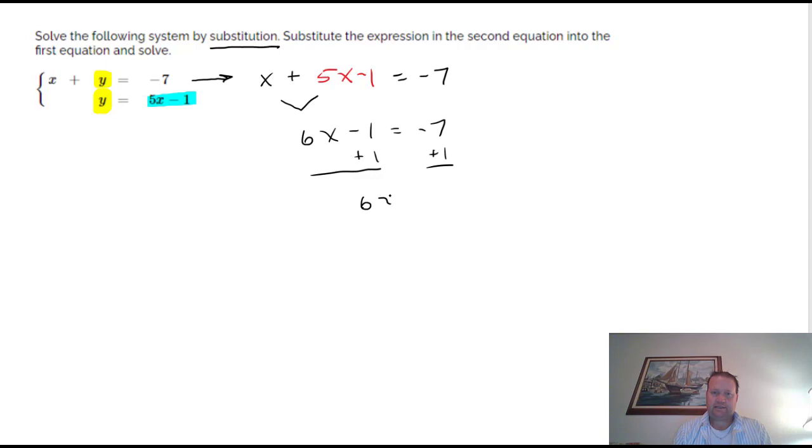We'll add the one, get rid of it. 6x equals negative 6, and when we divide by 6, x is negative 1.